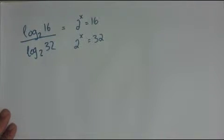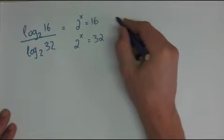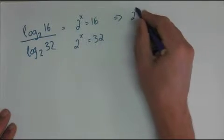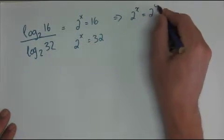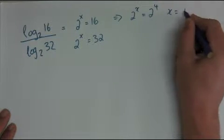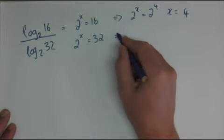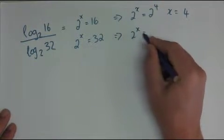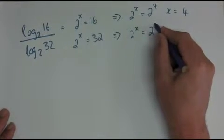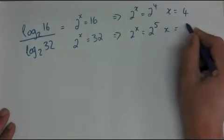Using this understanding that I have, I can solve each of these parts for x and have that 2 to the power of x is the same as 2 to the power of 4 and therefore x is equal to 4. And that 2 to the power of x is equal to 2 to the power of 5 and therefore x is equal to 5.